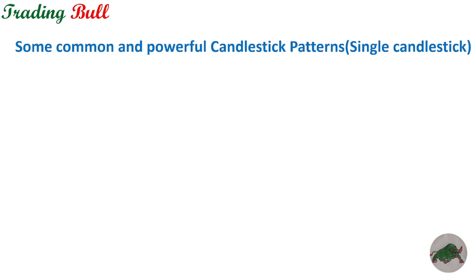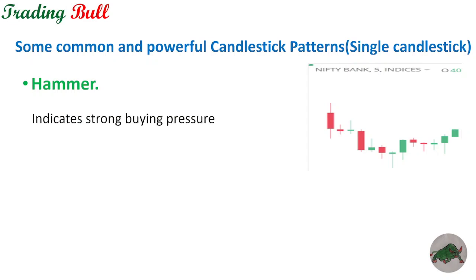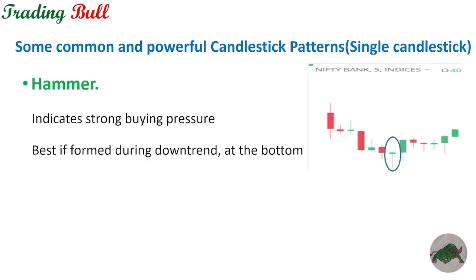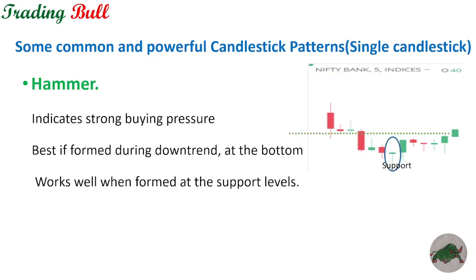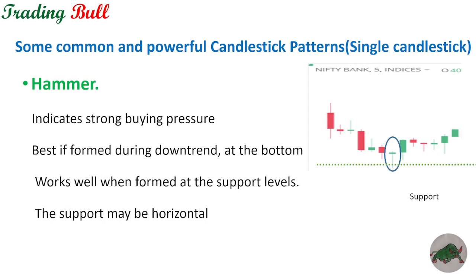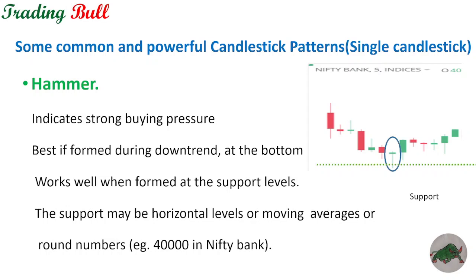Some common and powerful single candlestick patterns are discussed here. The first type is the hammer, which indicates strong buying pressure. It is best formed in a downtrend at the bottom of the candlestick chart, and it works well when formed at support levels. Support may be horizontal levels, moving averages, or round numbers — for example, 40,000 in Nifty Bank.